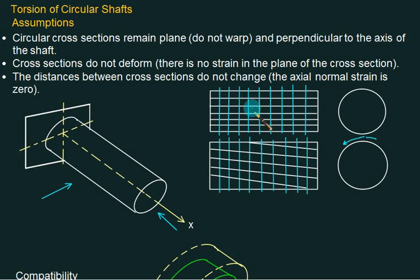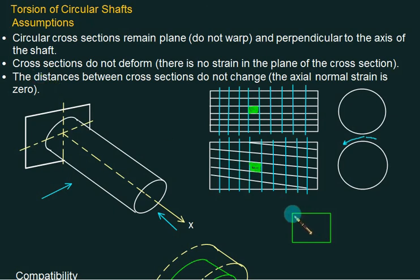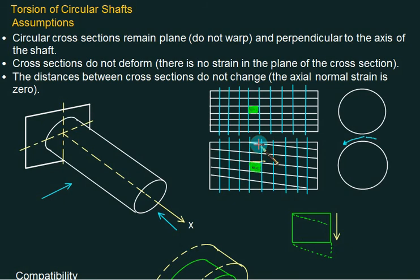If you consider any element here, which was initially a square in shape, it is now become this shape. One of the sides has been elongated. If I increase the size, this was the original arrangement and now I get the deformation along this way. The original grid line was horizontal; now the line has become tilted. Naturally this effect is due to shear. It is very true that shear will form in the case of torsion.